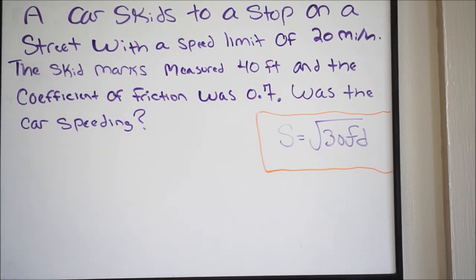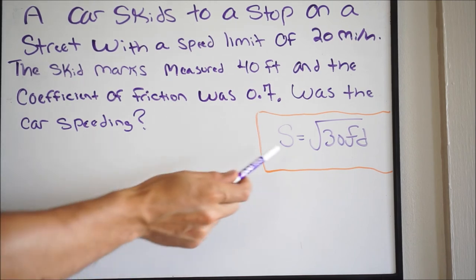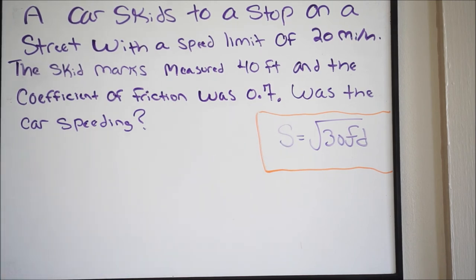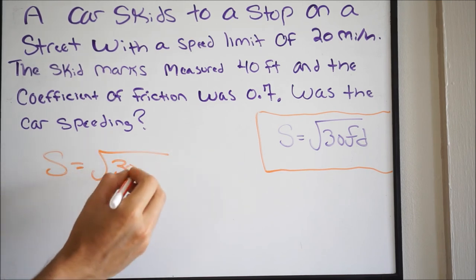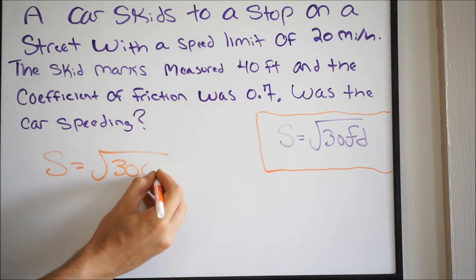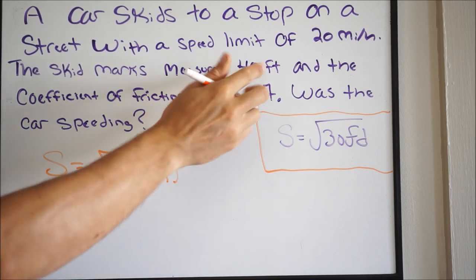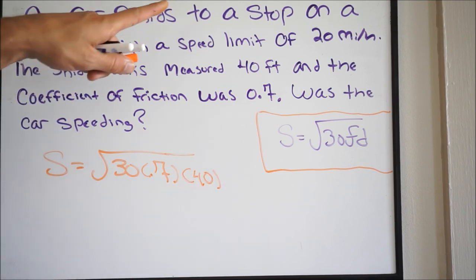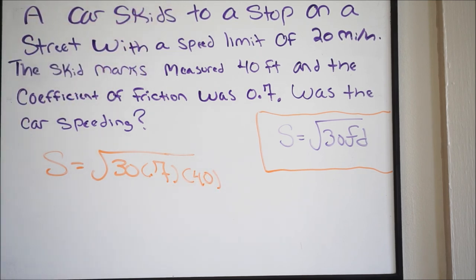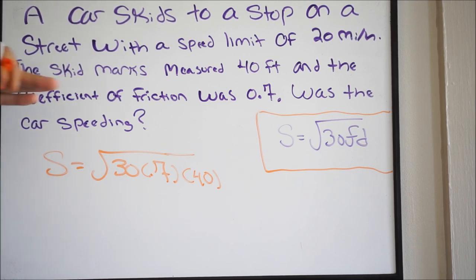We already know that they were going above the speed limit. Let's set this up another way — instead of solving for D, you could actually solve for the speed. So you put S equals the square root of 30 times 0.7 times the distance of the skid mark, which was 40. When we do this, if we get a speed higher than 20 miles per hour, we know they were going above the speed limit.